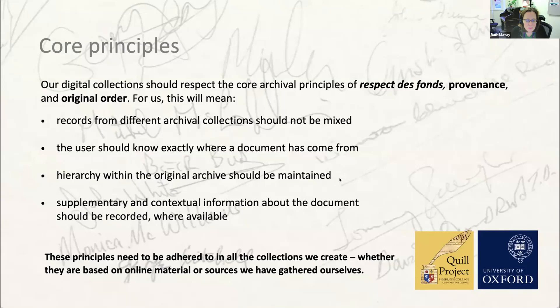The first principle means records from different archival collections should not be mixed, and all the files from one archive should be in one resource collection. For example, imagine you want to model the Council of Elrond and you've collected materials from three different archives — the Rivendell archive, the Bilbo Baggins archive of Middle-earth, and Aragorn's royal collection. You don't create one Council of Elrond collection mixing all three together; you need a different collection for each archive.